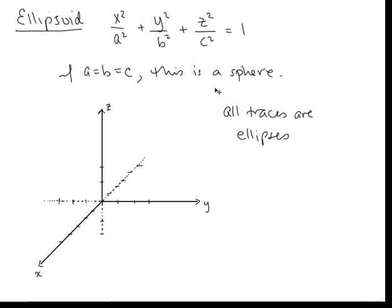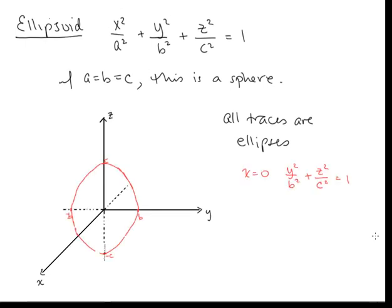Let's take a look at the trace when x equals 0. If we plug 0 in for x, this term drops out and we're left with y² over b² plus z² over c² equals 1. Remember, x equals 0 is the yz plane, so we have this ellipse sketched in the yz plane. Keep in mind that saying this ellipse is in the yz plane, or the plane x equals 0, means that for all the points on this ellipse, the x coordinate is 0. This curve is not moving forward and back in three-dimensional space.